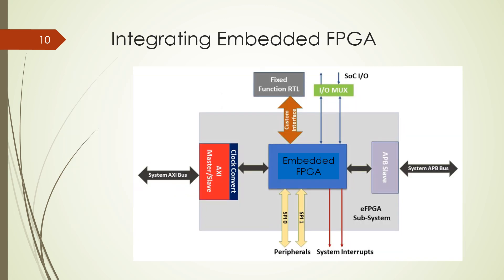For integrating an embedded FPGA, the main part of the embedded system includes the FPGA chip and all connections through the bus system. You have SPIs — Serial Peripheral Interface 0 and 1 — as peripherals. Then you have the APB, or Advanced Peripheral Bus, and interfaces for input/output including the AXI — Advanced Extensible Interface — plus clock circuitry.